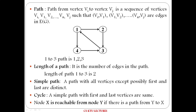The length of this path is 2. Then what is a simple path? A path with all vertices except possibly the first and last being distinct is called a simple path. Then what is a cycle? A simple path where the first and last vertices are the same is called a cycle. Node X is reachable from node Y if there exists a path from Y to X.